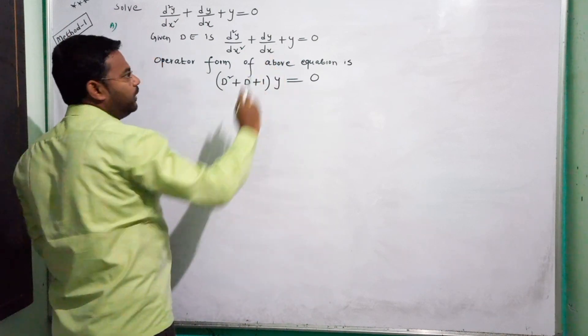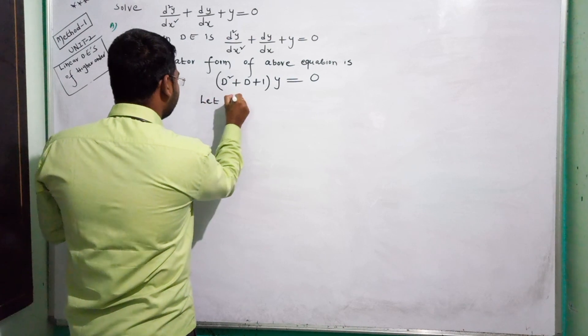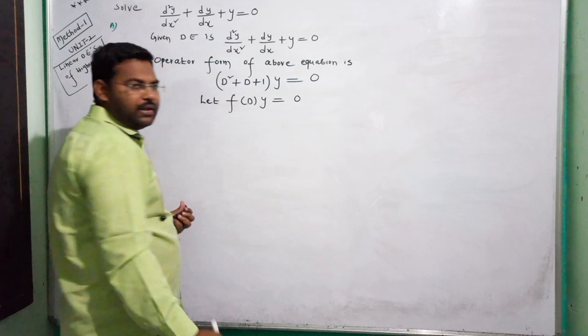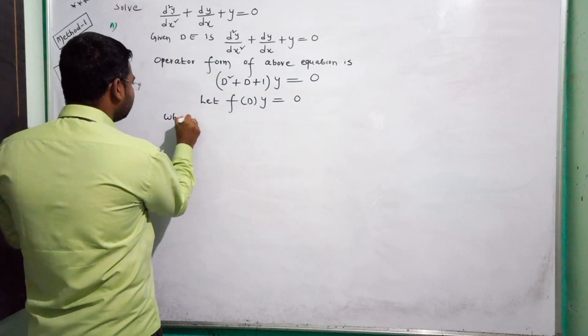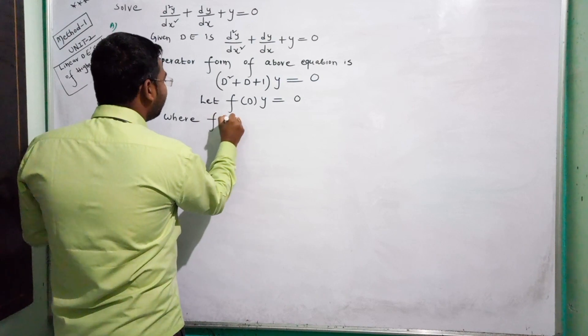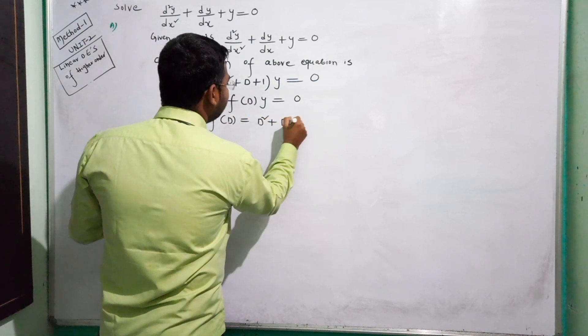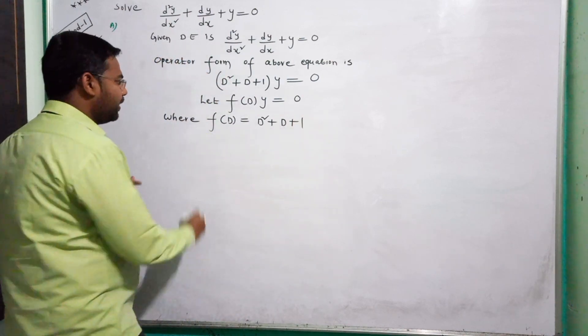Let F of D times Y equals zero. Where F of D is equal to D squared plus D plus 1. Now we need to find the auxiliary equation.